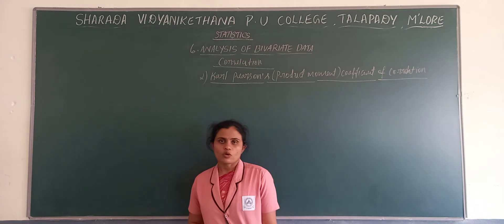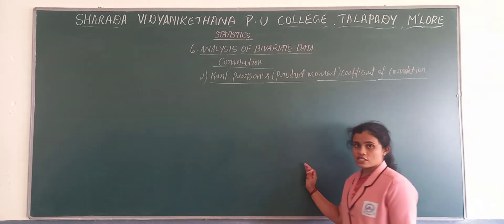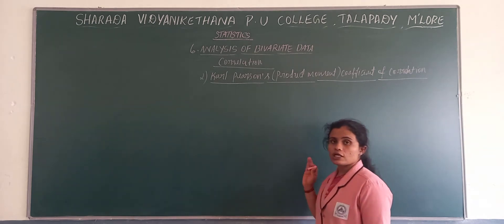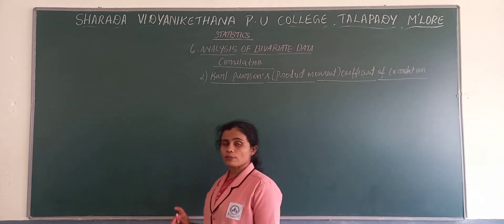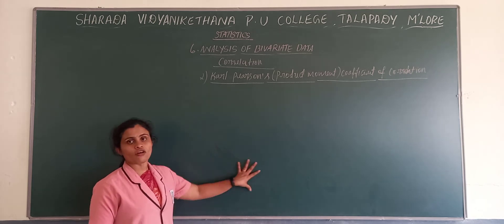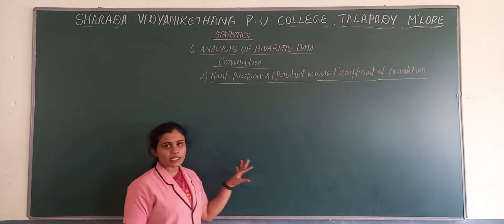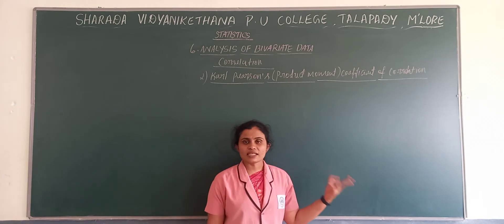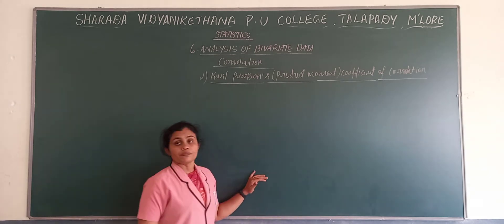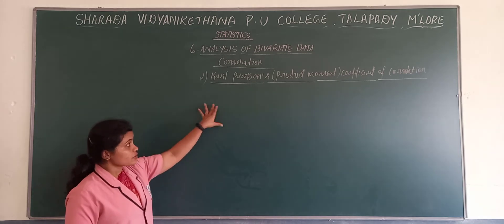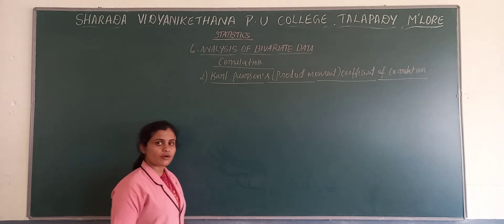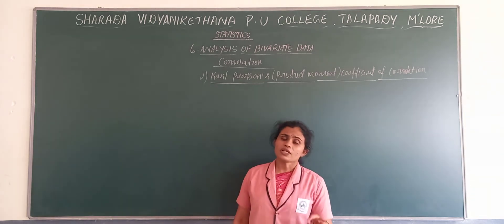Product moment coefficient of correlation and Karl Pearson's is one and the same. This is very, very important — these problems are very, very important for 5 marks. Here you have a set of formulas. Today I'll be giving the formulas, and in the next session, we'll start with the problems. I will give the formulas based on ungrouped and grouped data.